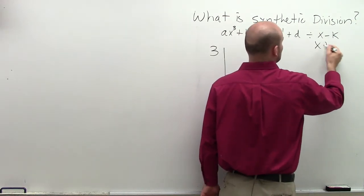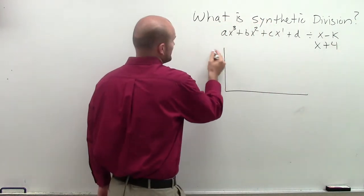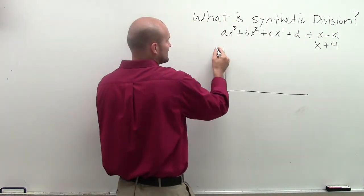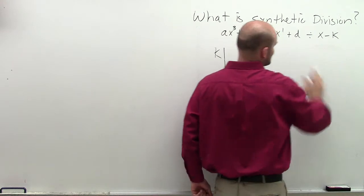If I did x plus 4, my k would now be negative 4. You're taking the opposite value. x minus k and here is k. So that's one of the big mistakes.